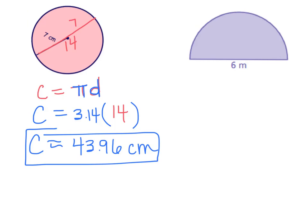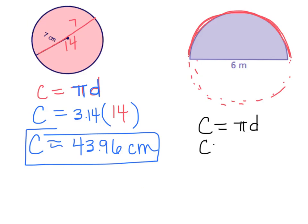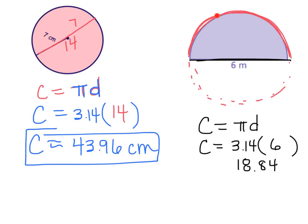I have another circle — this time it's a half circle, or something called a semicircle, and we're going to find the circumference. We need to figure out how long this curved part of the circle is. It's not a full circle, it's a half circle, so if we completed the circle, that would be a full circle. Write the circumference formula: C equals pi times diameter. Pi is 3.14 and the diameter is 6. Type in 3.14 times 6 and you get 18.84 — that's all the way around. Since I only need half, I divide by 2, which gives me 9.42.